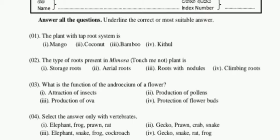Let's move to the video. Answer all the questions by underlining the correct or most suitable answer. The first question: the plant with a taproot system. The options are: mango, coconut, bamboo, and kithul. We know taproot is present only in dicotyledon plants, so among these plants only mango is a dicotyledon plant.